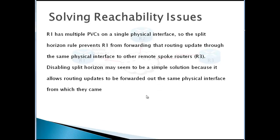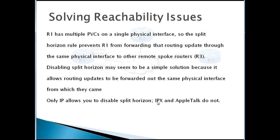Some people might say: let's just disable split horizon. Disabling split horizon might seem to be the simplest solution because it allows routing updates to be forwarded out of the same physical interface from which they came. However, there was a reason it was there. Only IP allows disabling split horizon — IPX and AppleTalk do not. Disabling it increases the chance of routing loops.